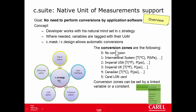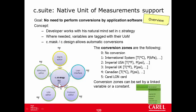Once selected at design time or runtime, the conversion zone for each area is automatically applied by the system. In the first scenario, suppose the application is developed in Europe, so the developer defined temperatures in Celsius in C-Strategy, but the unit is installed in the United States, where the customer prefers Imperial USA — that is, temperatures in Fahrenheit. So everywhere will show Fahrenheit, and the system will automatically convert Celsius to Fahrenheit.